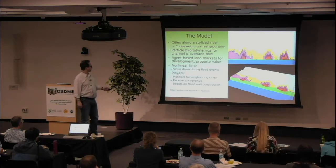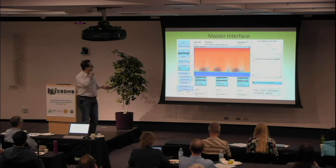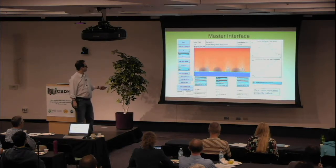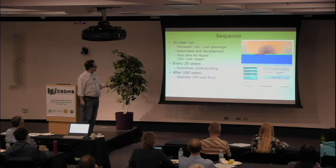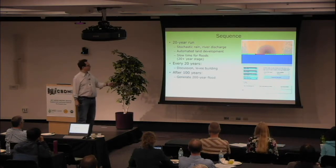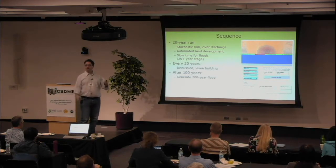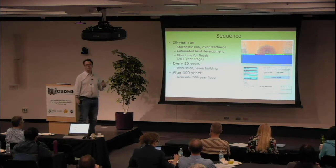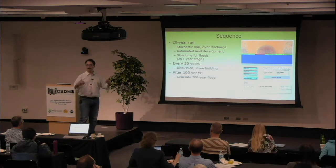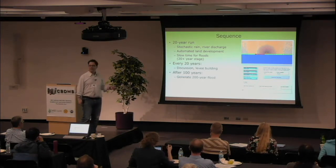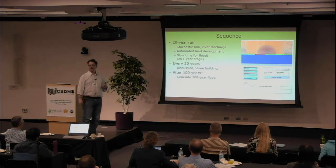The players are the planners for neighboring cities. They receive tax revenue and decide on flood wall construction. All the code is open source on GitHub and it runs in NetLogo. The master interface shows floods and controls; individual players see a segment of the river and can decide whether to build a levee. The model runs in sequences of about 20 years with slowdown in case of large floods, then pauses for discussion and policy-making. This repeats five times, and after 100 years, a 200-year flood is manually generated so players can see what a really large event does to cities they've prepared over a century.